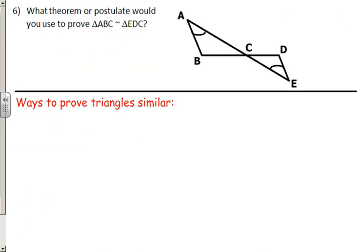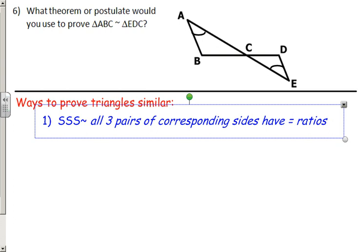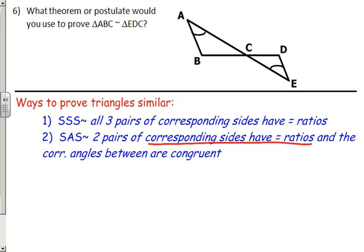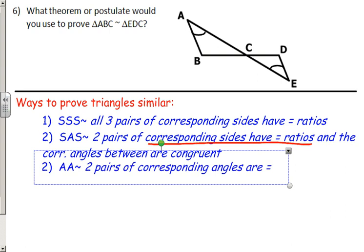Number 6: what theorem or postulate would you use to prove triangle ABC is similar to triangle EBC? There are three ways to prove triangles similar. First is Side-Side-Side: you prove all three pairs of corresponding sides have equal ratios. Second is Side-Angle-Side similarity: two pairs of corresponding sides are proportional with the included angle congruent. Third is Angle-Angle similarity: two pairs of corresponding angles are congruent.